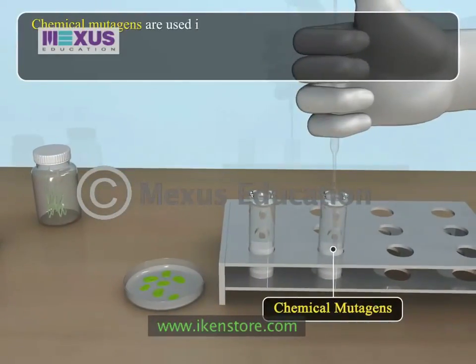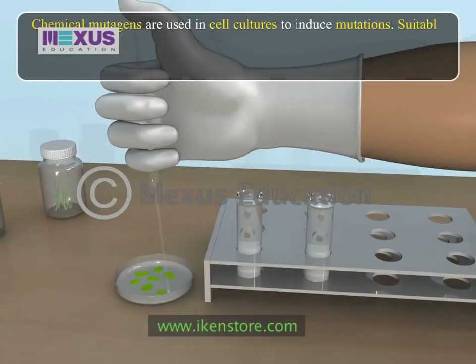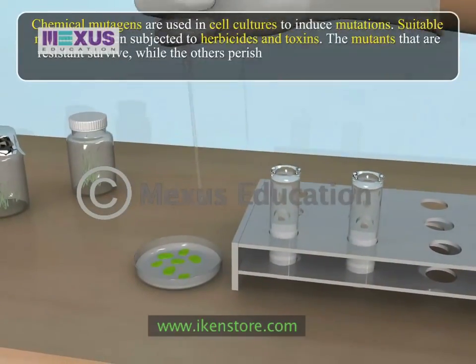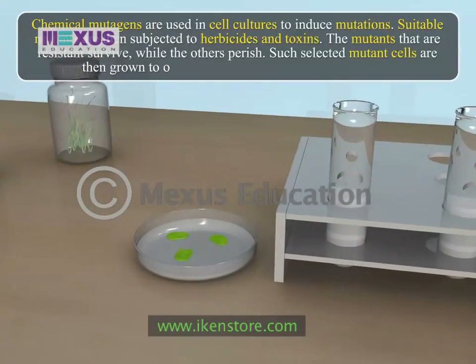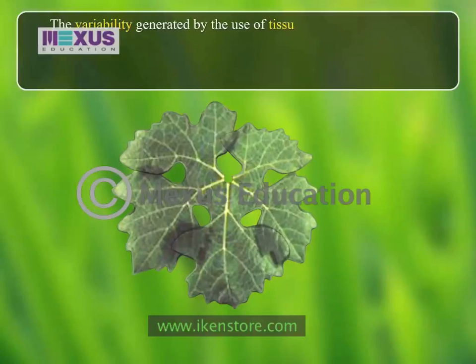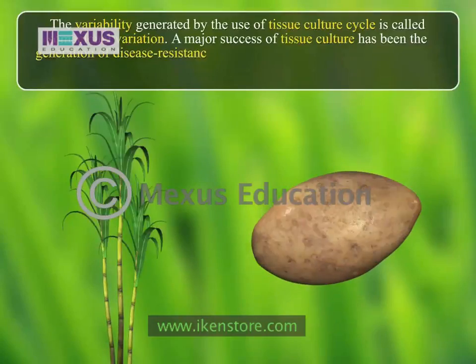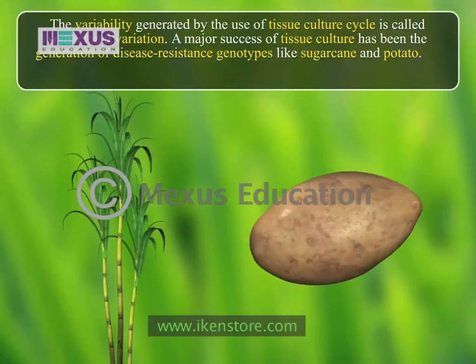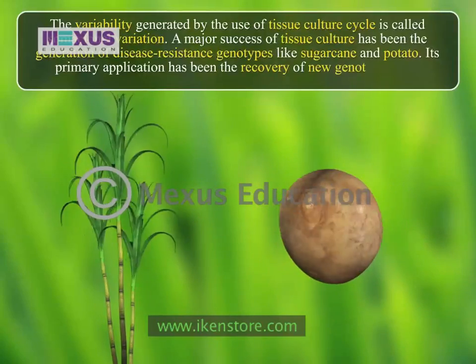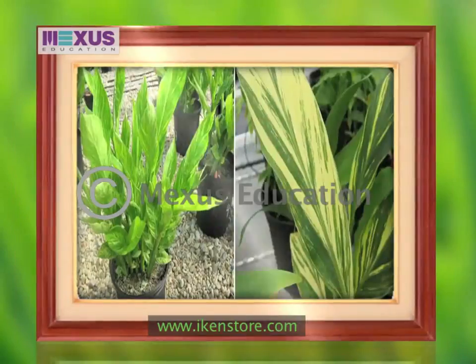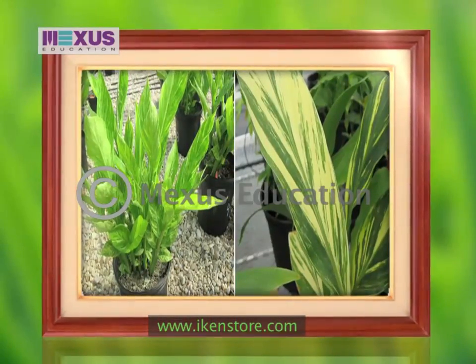Chemical mutagens are used in cell cultures to induce mutations. Suitable mutants are then subjected to herbicides and toxins. The mutants that are resistant survive while the others perish. Such selected mutant cells are then grown to obtain plantlets for agricultural purposes. The variability generated by the use of tissue culture cycles is called somaclonal variation. A major success of tissue culture has been the generation of disease-resistant genotypes like sugarcane and potato. The variability in somaclonal variation is attributed to pre-existing variability in explants, tissue culture-induced variability, somatic recombination in tissue culture, chromosomal aberrations, and transposon mutagenesis.